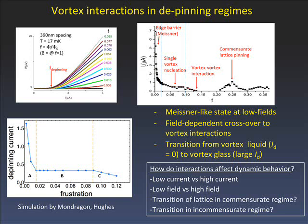This was interesting — knowing where interactions occur and where the crossover occurs — but now we want to compare the actual dynamic behavior of the vortices by driving them with current and seeing what different dynamic behavior we observe, now that we know the different interaction regimes. We want to see what happens at low current versus high current, low field versus high field, and commensurate versus non-commensurate.